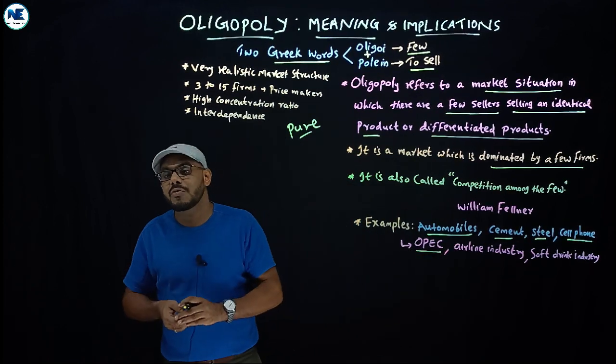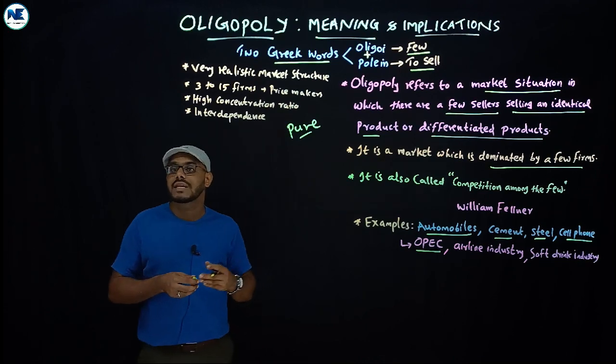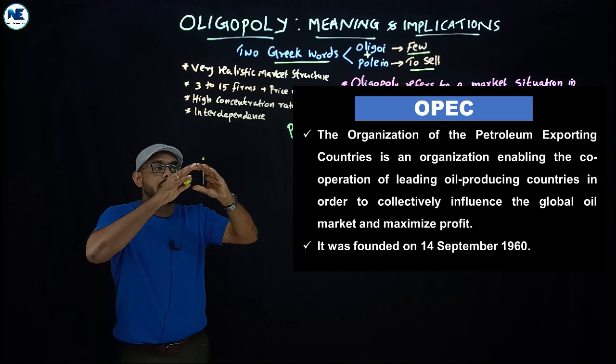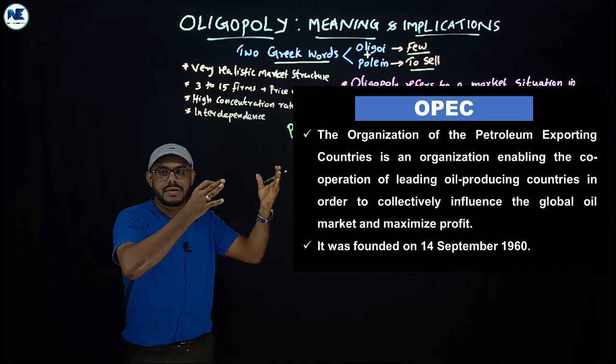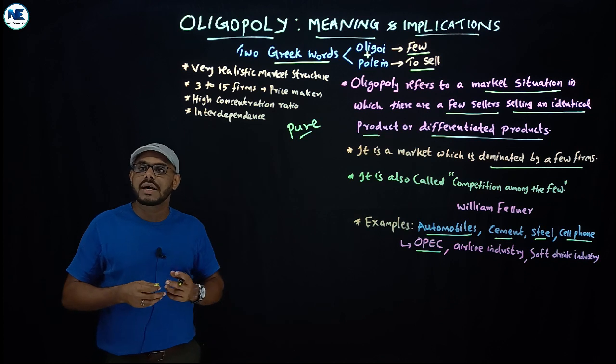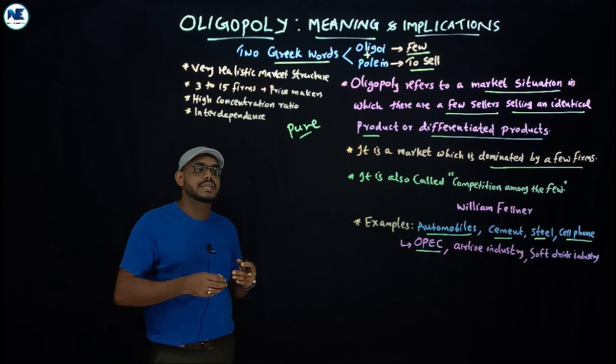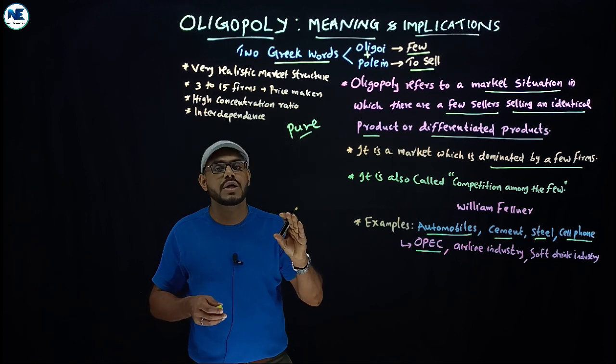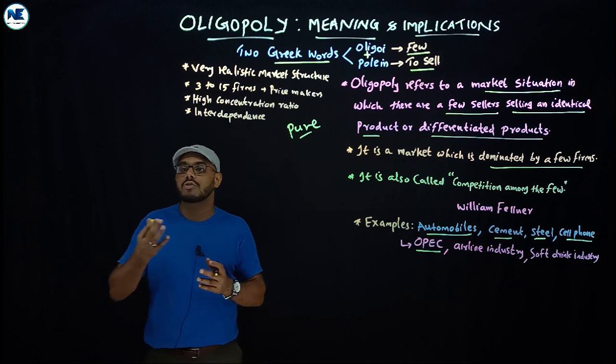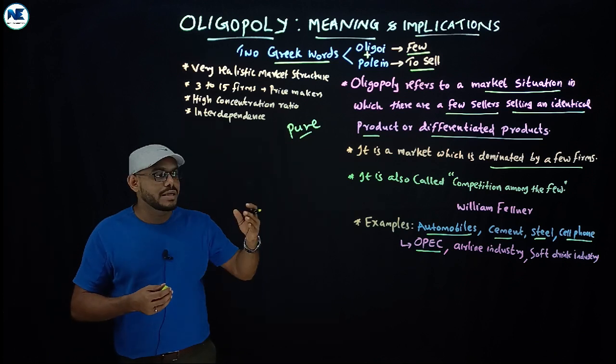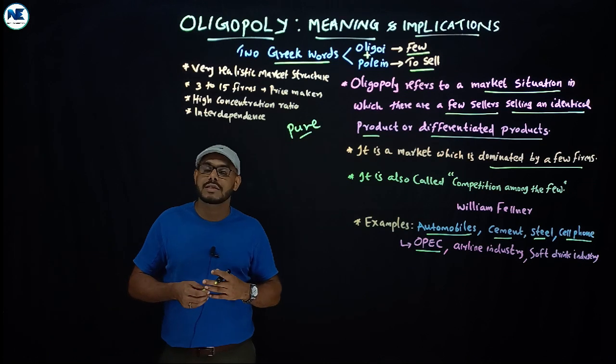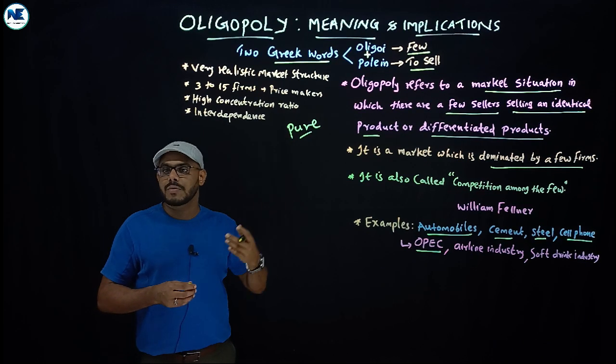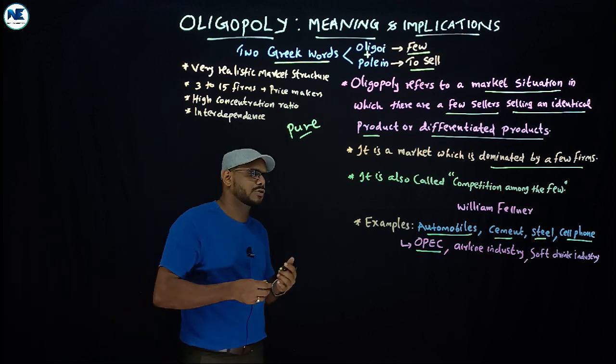Another cartel, an international cartel, is OPEC—Organization of Petroleum Exporting Countries—including Saudi Arabia, Iraq, Iran, and others. OPEC is a pure oligopoly which is actually producing and selling homogeneous product: oil and gas. But in car industry or automobile industry we can see differentiated products—BMW, Audi, and other types of cars—that is differentiated oligopoly.